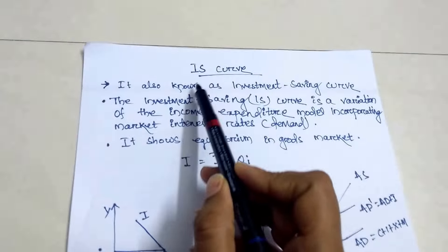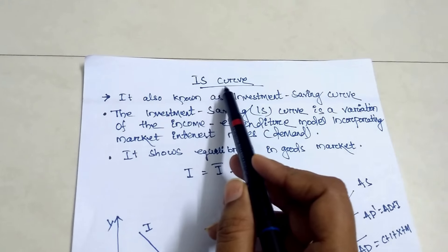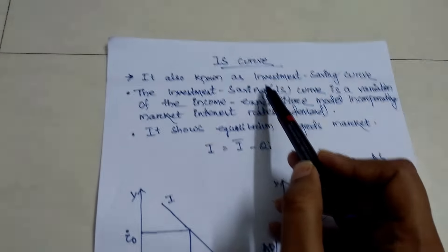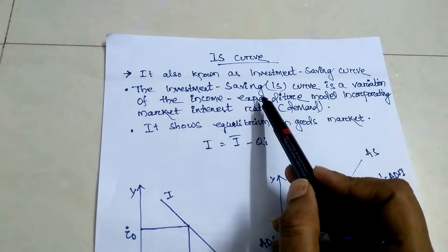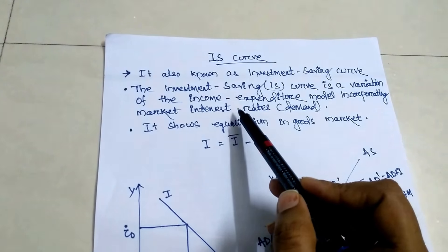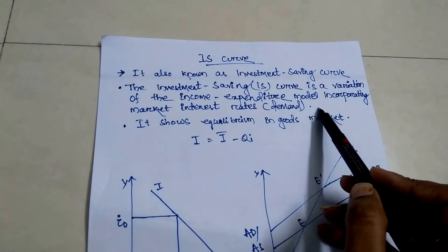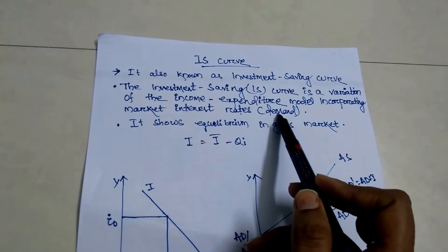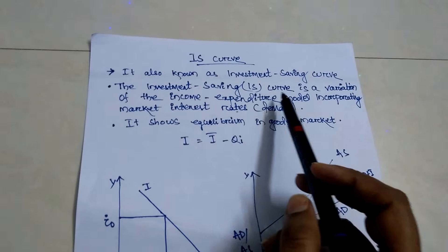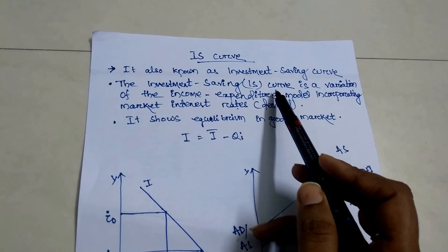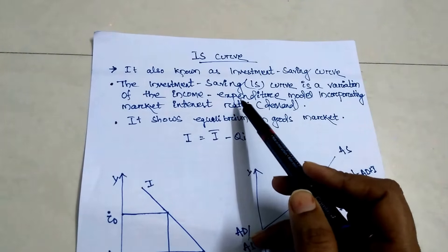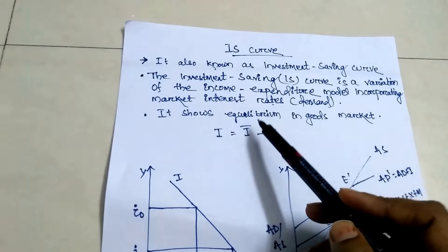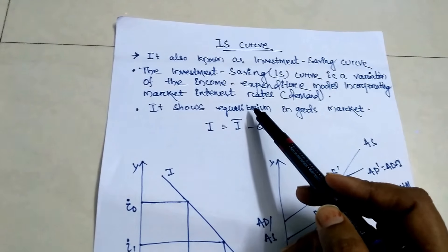What is the full form of IS curve? It is also known as the investment-saving curve. The investment-saving curve is a variation of the income-expenditure model incorporating the market interest rate, that means demand. The investment-saving curve shows the variation of the income-expenditure model incorporating the market interest rate.